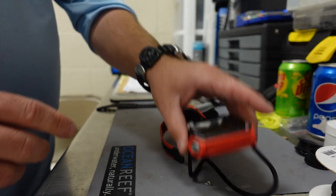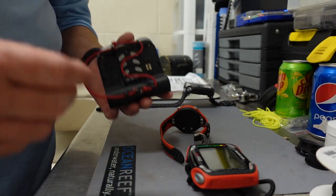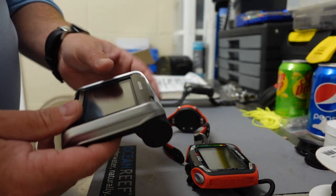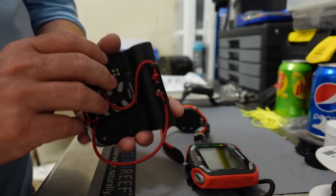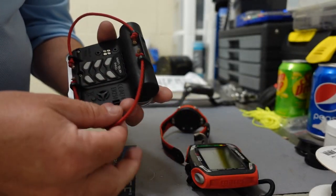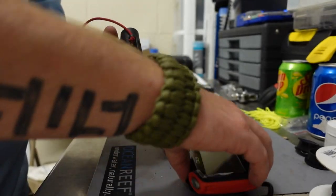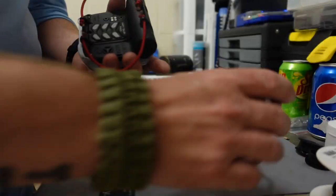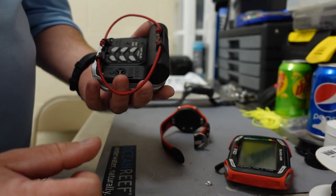So it makes it really nice. But over here, we have two individuals. Now, this is one of our other instructors. He dives the Mares Genius. And he actually has two bungees on here. Now, the reason he has two is because he's using a much thinner bungee than what I am. Mine's a 4mm, and this is more around a 2mm.